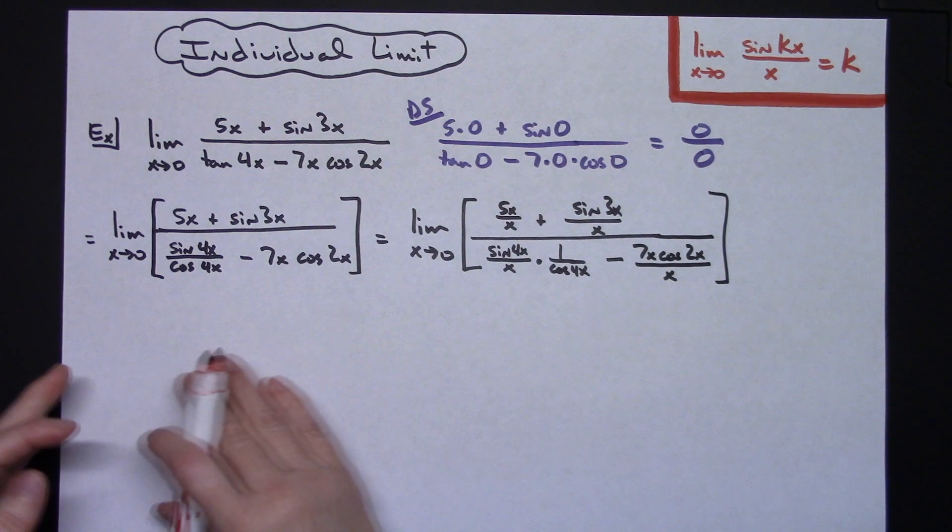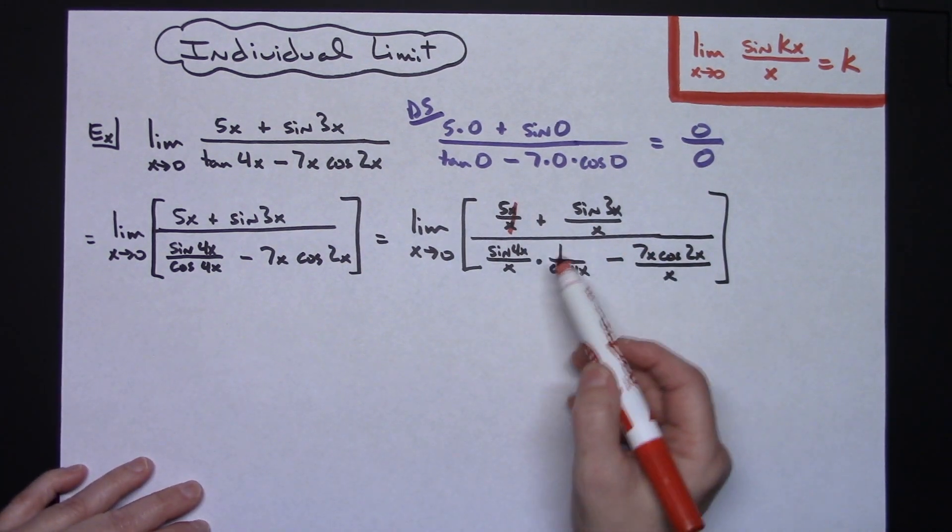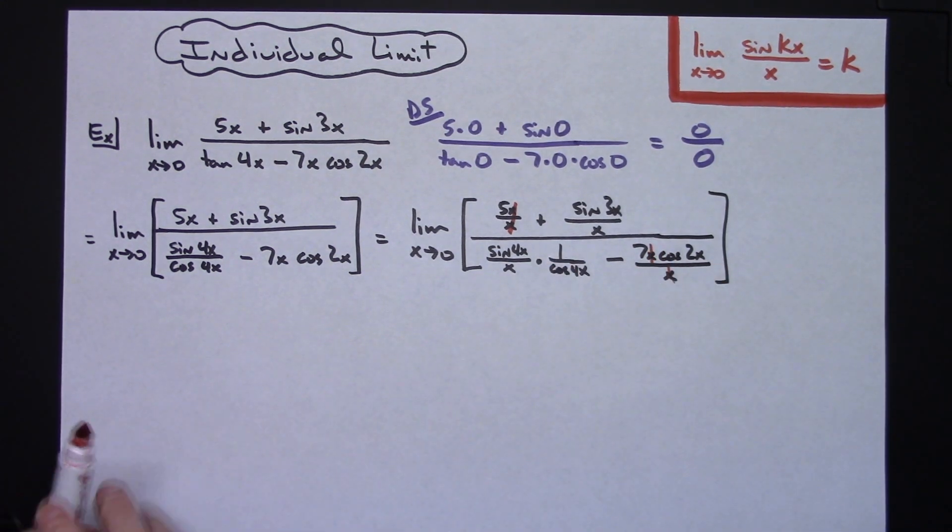Now next step I'm going to go through and on this next step I'm going to simplify. So here I'll have an x over x. This is going to stay. I'm going to leave this alone. I'm going to leave this alone. And on this one, this x and this x are going to cancel out in my next step.